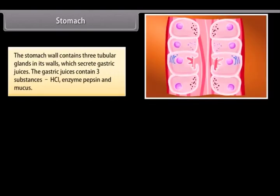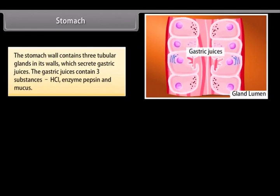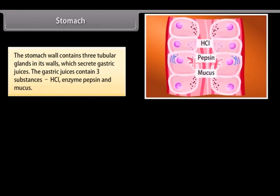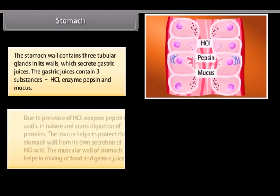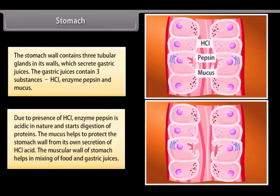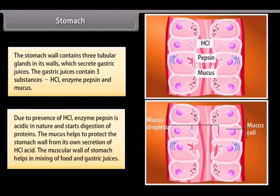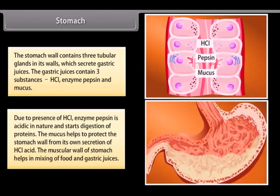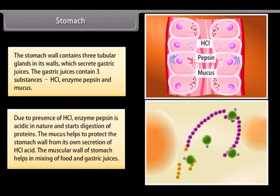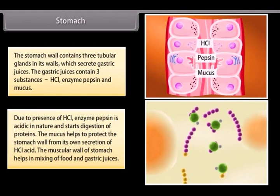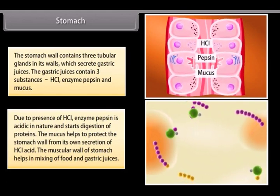The stomach wall contains tubular glands which secrete gastric juices. The gastric juices contain three substances: HCl, enzyme pepsin, and mucus. Due to the presence of HCl, enzyme pepsin is acidic in nature and starts digestion of proteins. The mucus helps to protect the stomach wall from its own secretion of HCl acid. The muscular wall of the stomach helps in mixing of food and gastric juices.